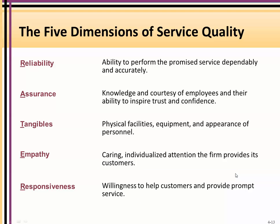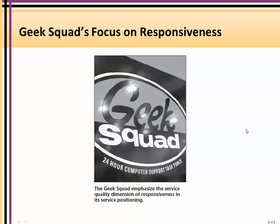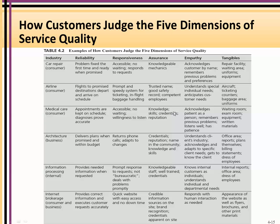We come again to the SERVQUAL five dimensions: reliability, assurance, tangibles, empathy, and responsiveness. Service is intangible, but the degree to which you make it tangible makes it more real and impactful to the customer. The Geek Squad, for example, focuses on responsiveness — 24-hour computer support. How customers judge the five dimensions varies by industry: car repair, airline, medical care, and architecture each weigh the five SERVQUAL attributes differently.